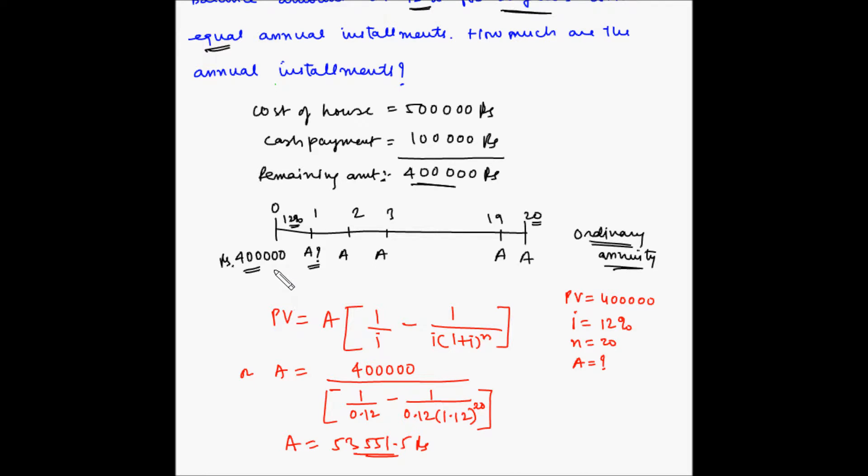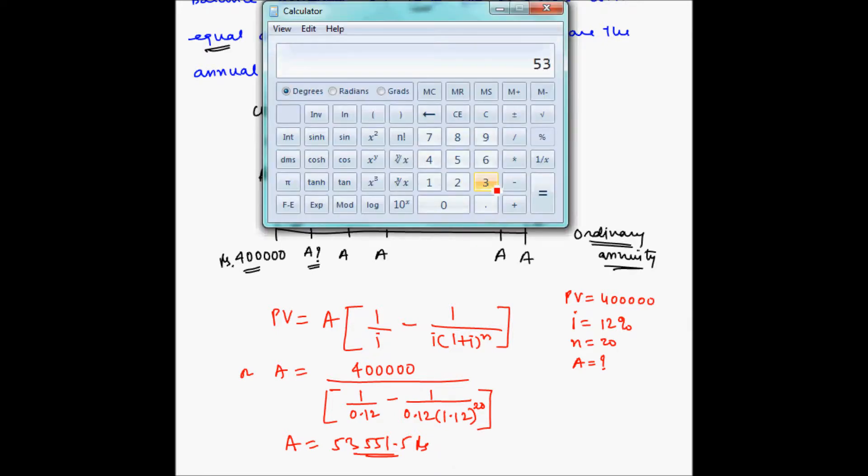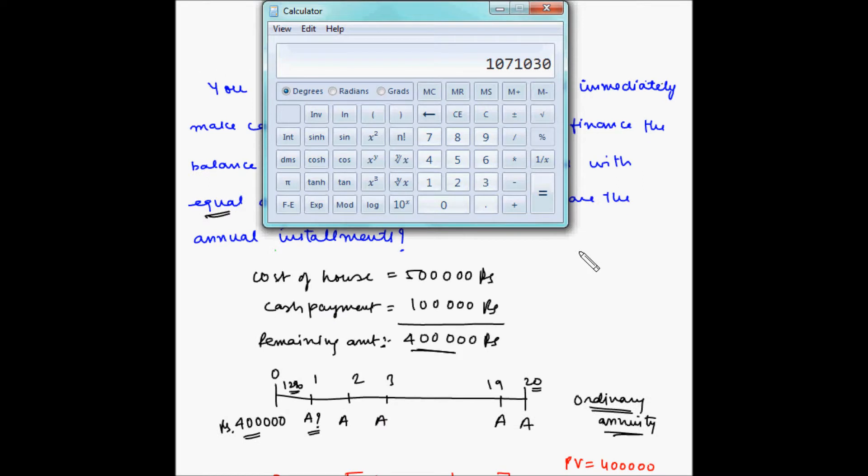Now just out of curiosity, let us find out 53,551.5 × 20. So total amount that you are going to pay is ₹10,71,030, which is 10 lakhs 71,030 rupees.